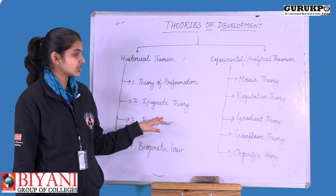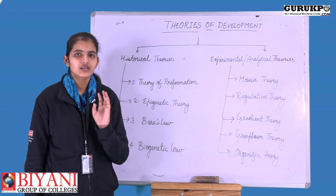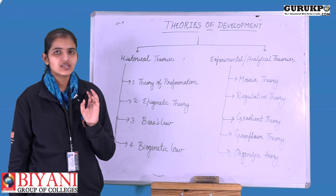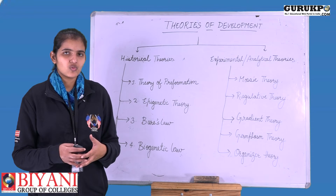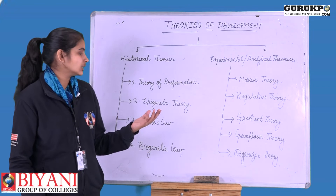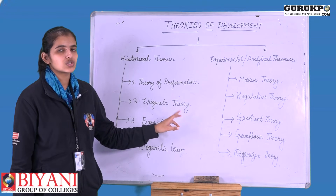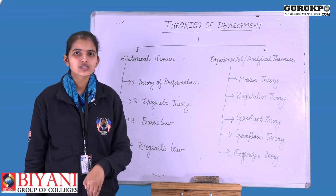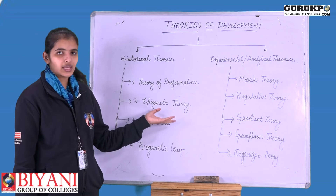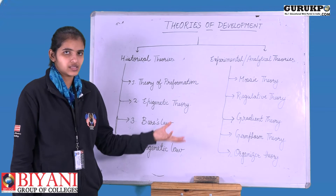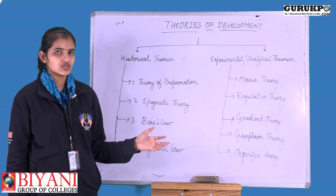Next came the epigenetic theory, which stated that development is a gradual process. No organism can develop directly; there cannot be a miniature human that simply fuses and grows. Instead, a gradual process starts from a single cell — cells become tissues, tissues become organs, and organs result in the formation of a complete organism. This was a general observation but lacked strict scientific experimental proof.